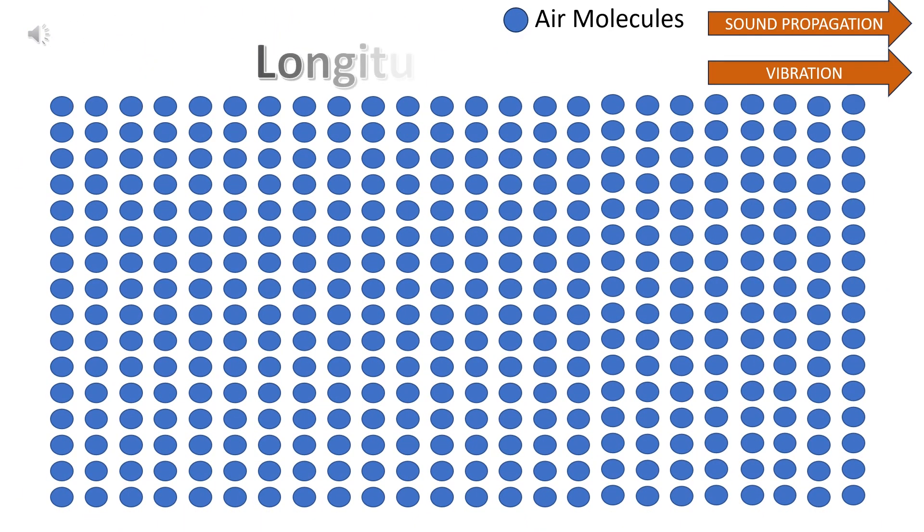Longitudinal sound waves vibrate in the same direction as the sound propagation. Longitudinal waves are also called pressure waves because of the region of compression and rarefaction, as you can see in the animation on this slide.